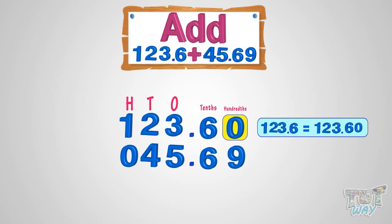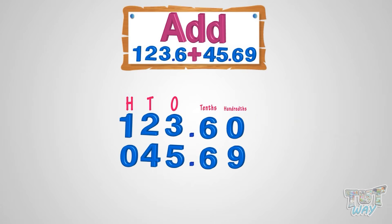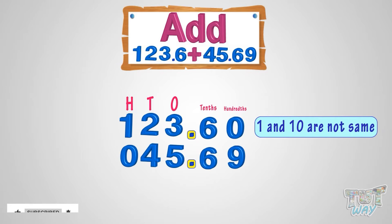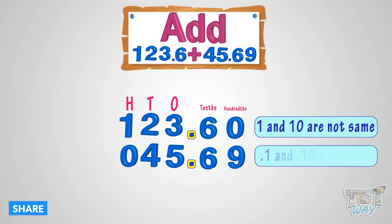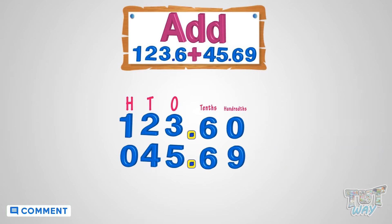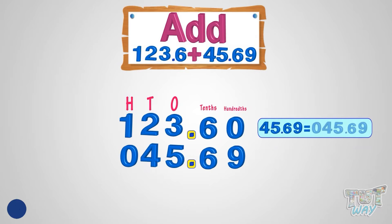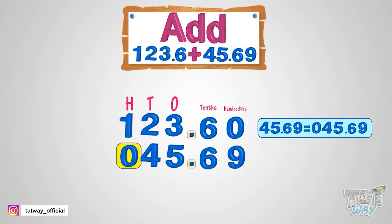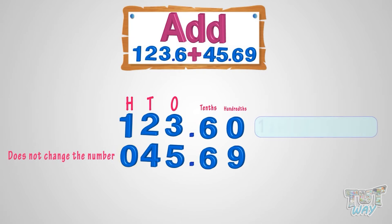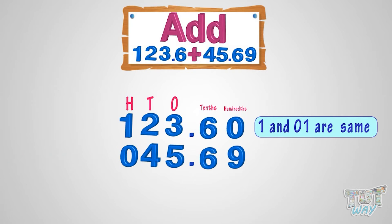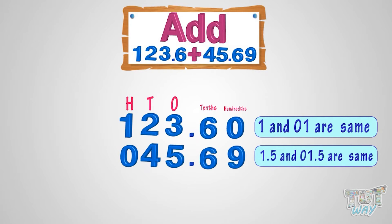Appending zeros at the end of decimal numbers does not change the number — remember, only in the case of decimal numbers. 1 and 10 are not the same, but 0.1 and 0.10 are the same. You can write 45.69 as 045.69 — appending zeros before any number does not change the number. 1 and 01 are the same, and 1.5 and 01.5 are the same numbers.